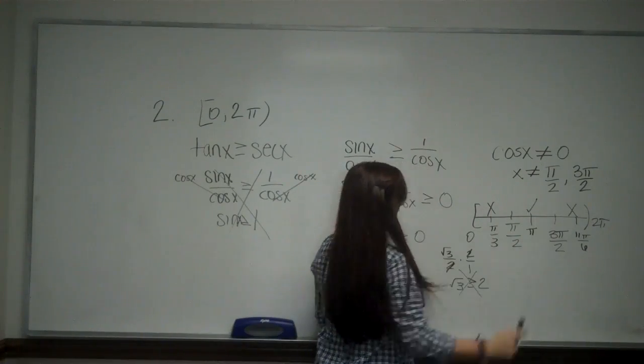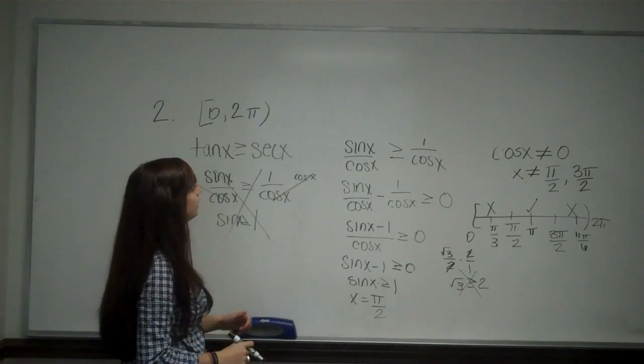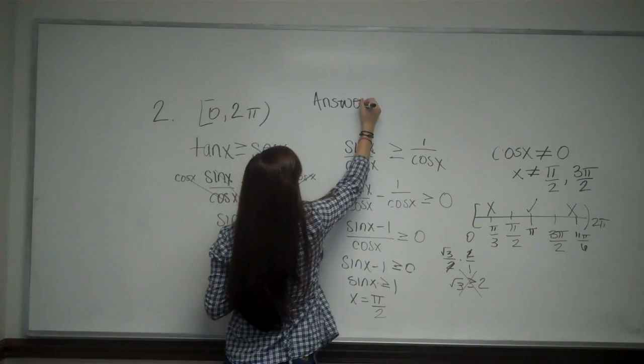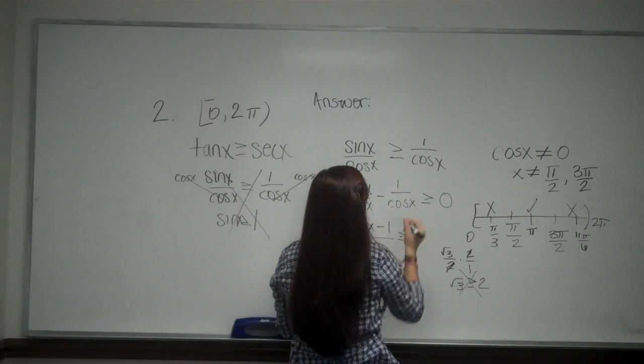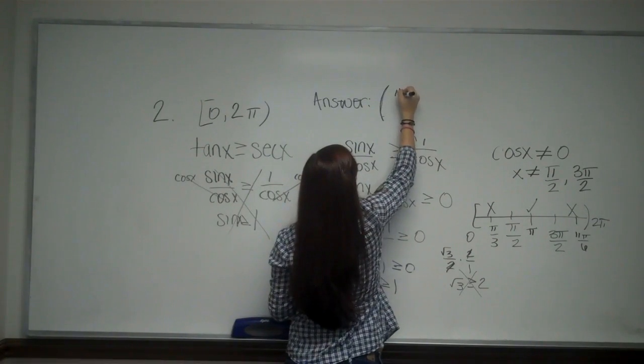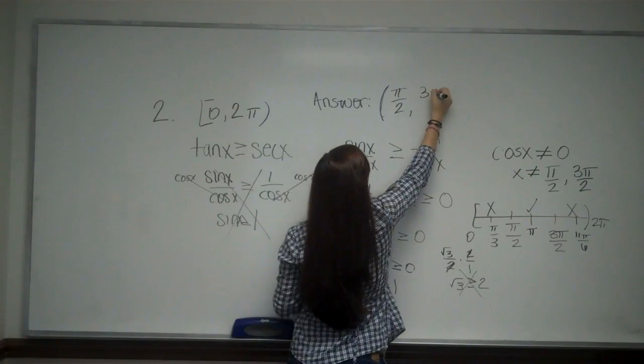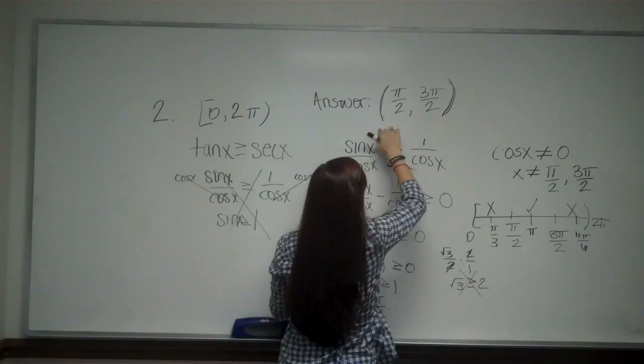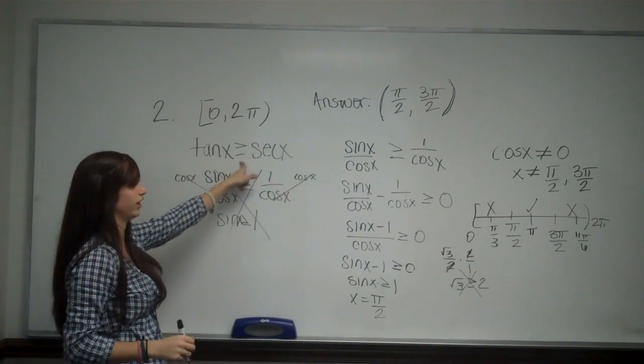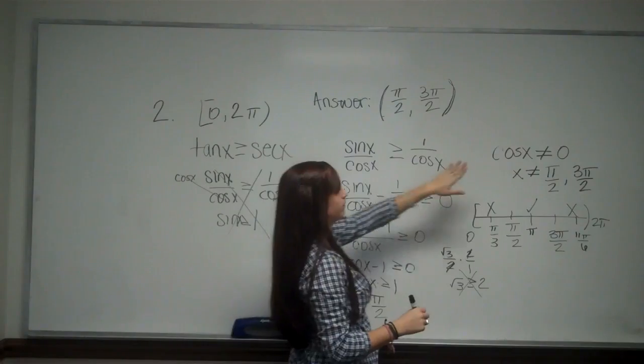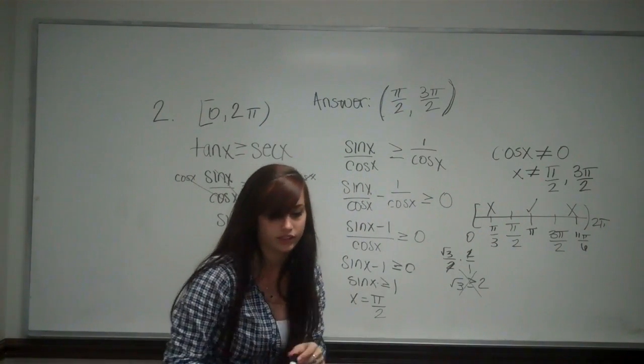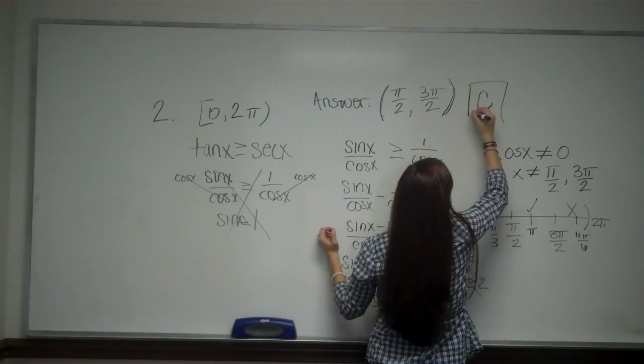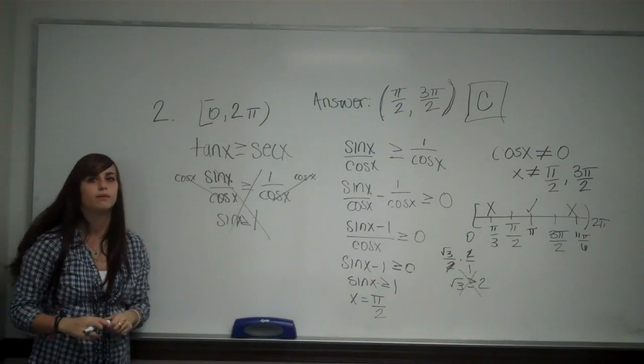So your final answer, I'll write it up here, should be from pi over two to three pi over two. And notice that these are parentheses not brackets even though it's greater than or equals two, because if they were to equal these numbers then I would not be in my domain. And on your test this is answer C. And that is problem number two.